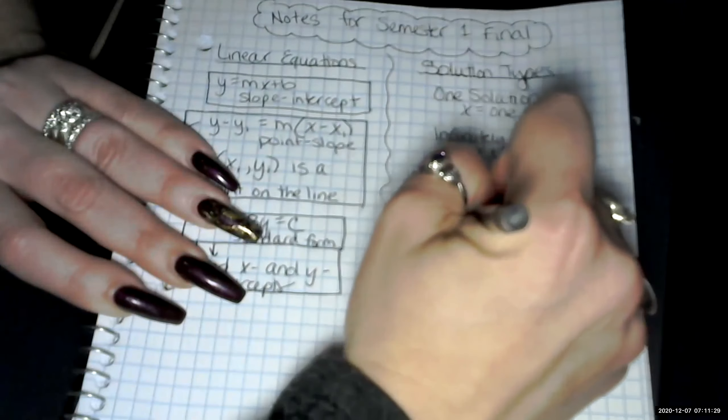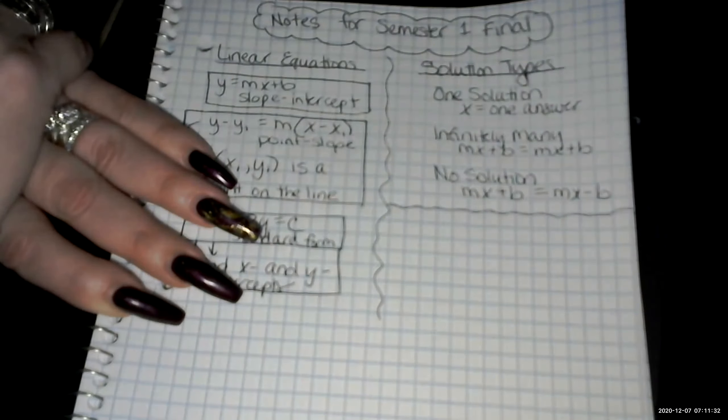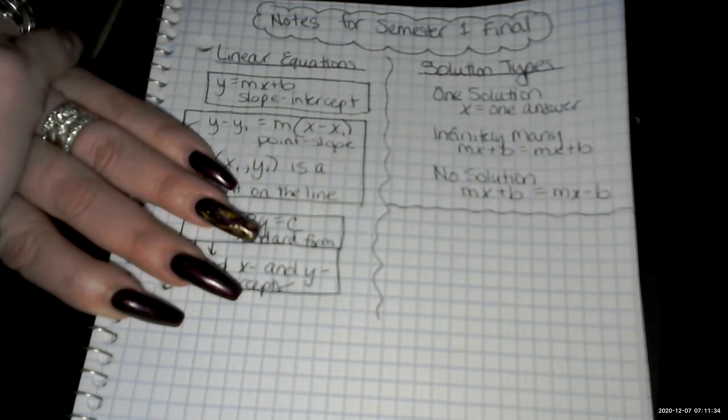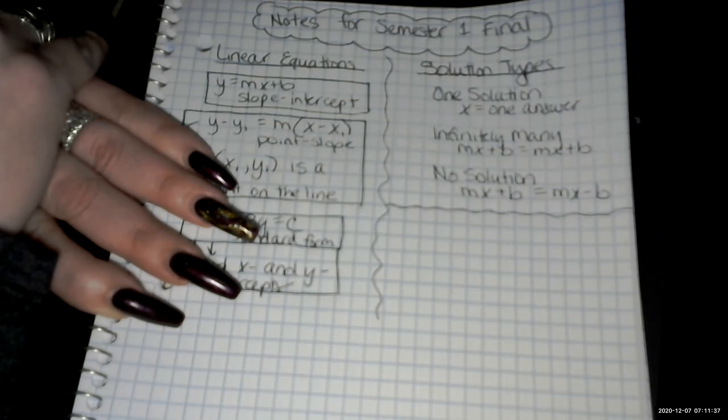So those are our different solution types. Just going to do another kind of squiggly like this. And as we're working, if other things come up, we'll make sure that we show those.